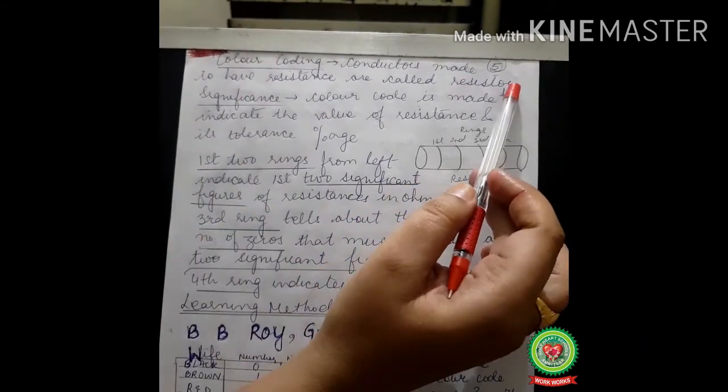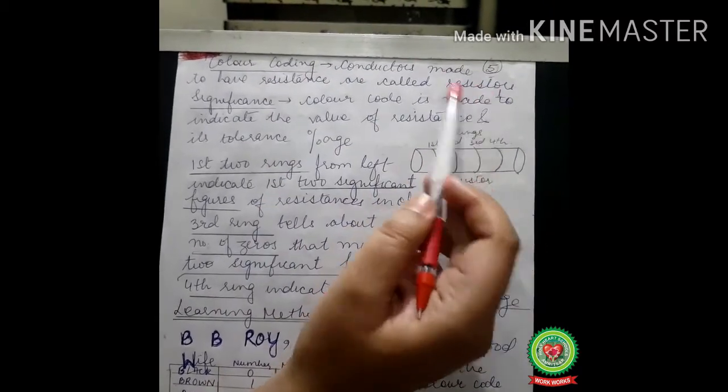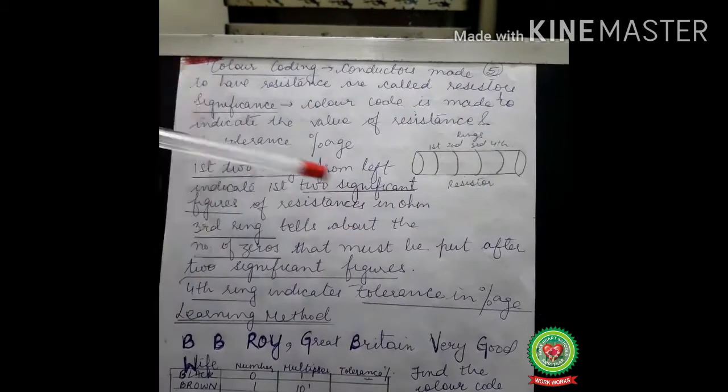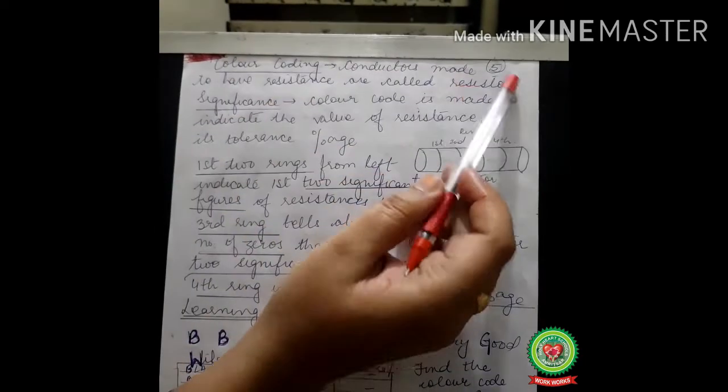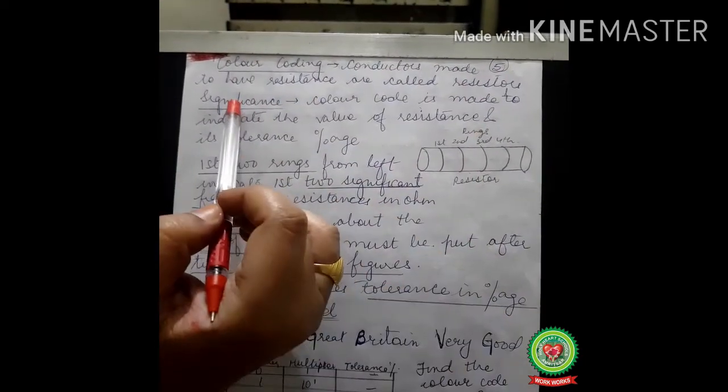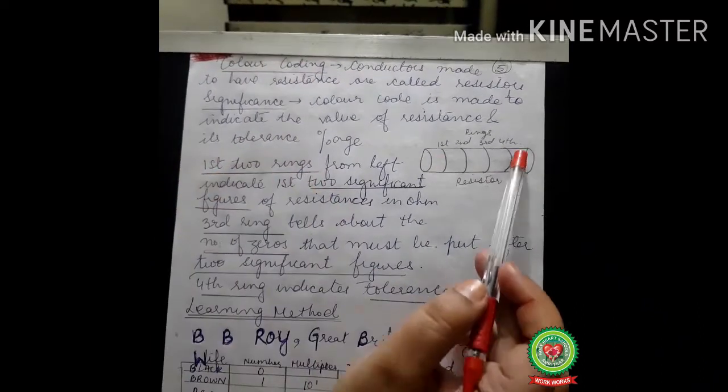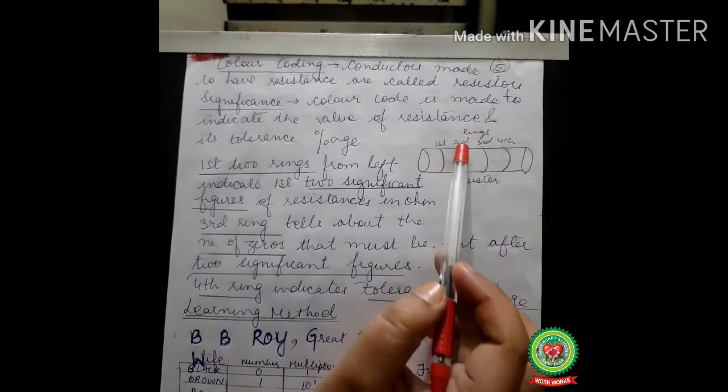Before color coding, we should know what resistors are. Conductors made to have resistance are called resistors. Now what is the significance of this color coding? We have not yet discussed what color coding is. This is a resistor and here rings are being made of different colors.